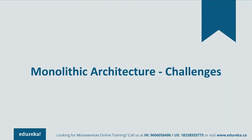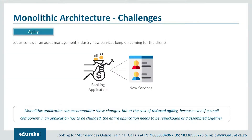Let's understand these challenges one by one. The first challenge is agility. Consider an asset management industry where different clients come with different investments and have to be offered different services. If any new services had to be given to new clients or any new changes had to be made, monolithic applications could accommodate those changes — but at the cost of reduced agility. This happened because even if a small component in an application had to be changed, the entire application had to be repackaged together.